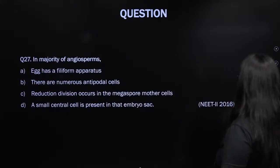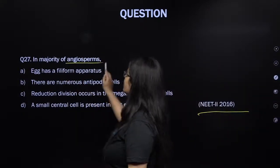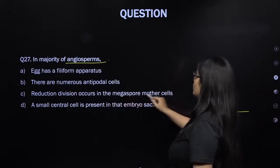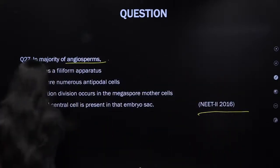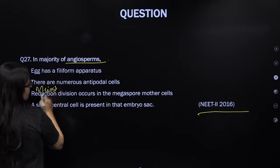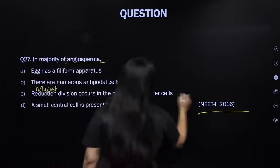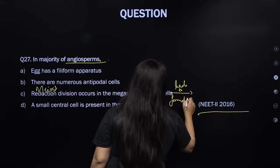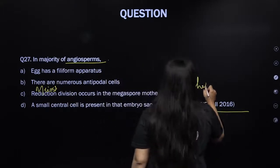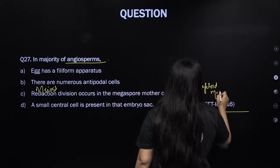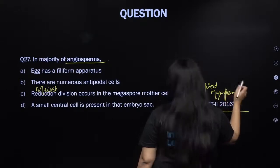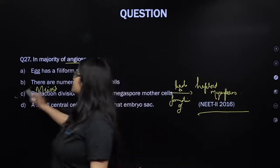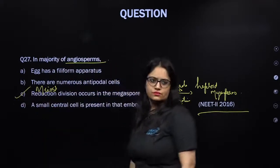From NEET Phase 2 2016: in majority of angiospermic plants, reduction division (meiosis) occurs in the megaspore mother cell, leading to formation of haploid megaspores.